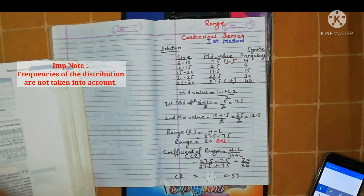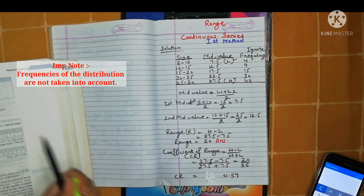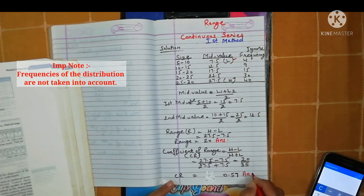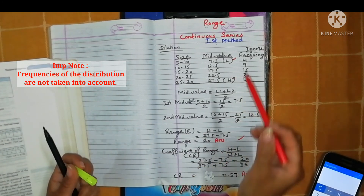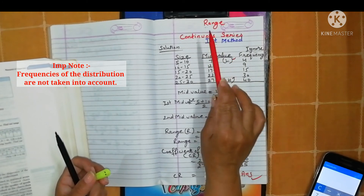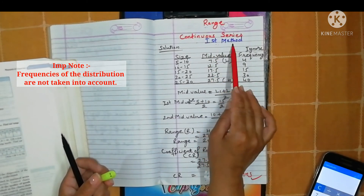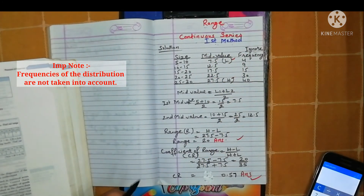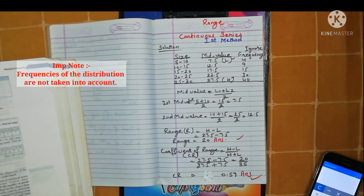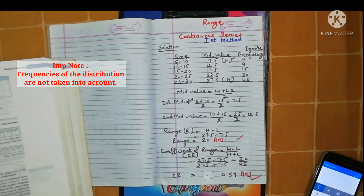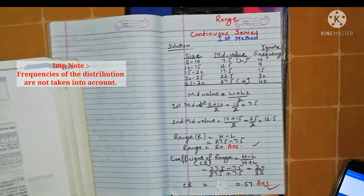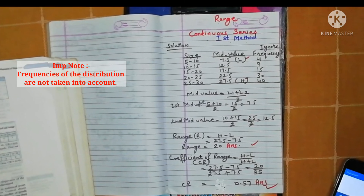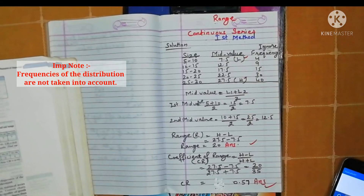So in this way, we find out range by using the first method under continuous series. In this video, you have learned how to find out range and coefficient of range in a continuous series by using the first method.